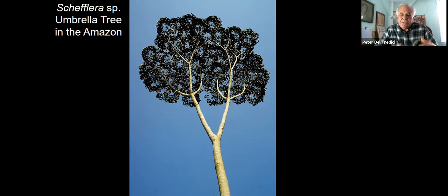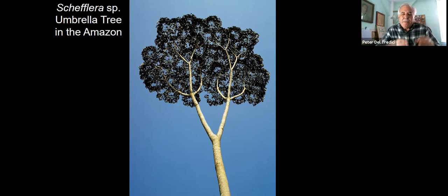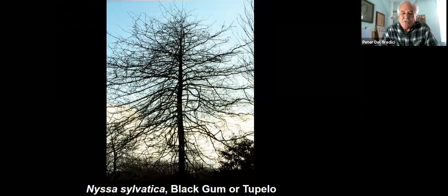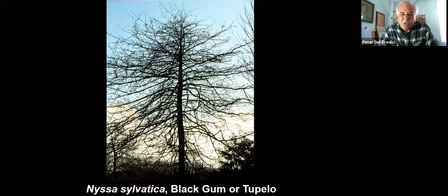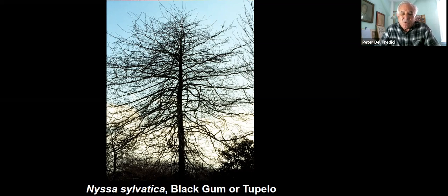Tree growth is essentially modular. As the tree grows, the modules that make up the form become smaller and more numerous. This is the basic process for tree growth. When you get good at understanding tree architecture, you can begin to learn how to recognize trees based on their form.